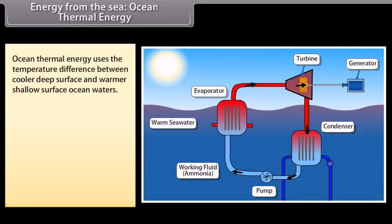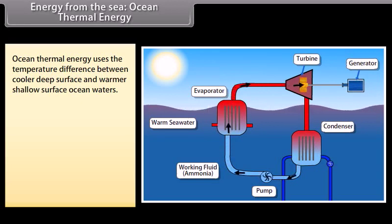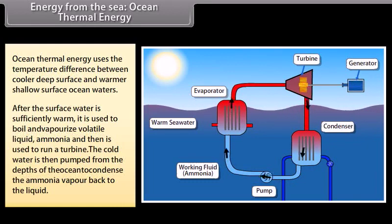Energy from the sea: Ocean thermal energy. Ocean thermal energy uses the temperature difference between cooler deep water and warmer shallow surface ocean waters to run a heat engine and produce useful energy, mainly electricity. The heat engine gives greater efficiency and power when run with a large temperature difference. In the oceans, the temperature difference between surface and deep water is greater in the tropical areas, while in other areas it is a modest 20 to 25 degrees Celsius. After the surface water is sufficiently warm, it is used to boil volatile liquid ammonia. The vapours of ammonia are then used to run a turbine. The cold water is pumped from the depths of the ocean and used to condense the ammonia vapour back to liquid.